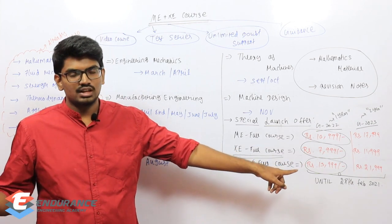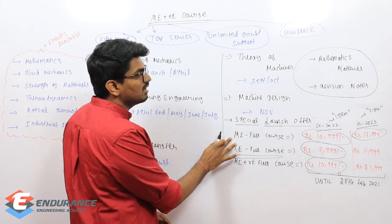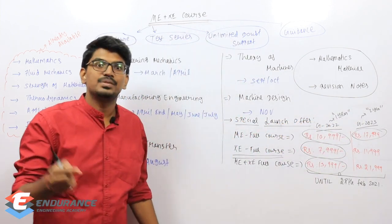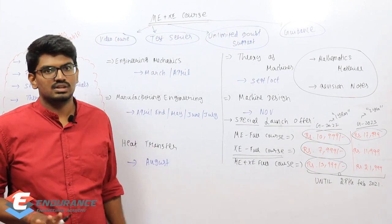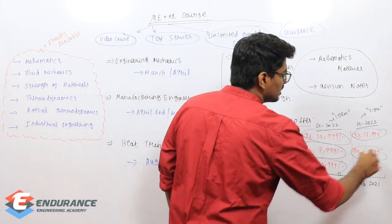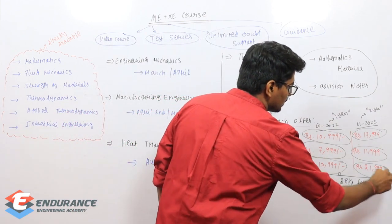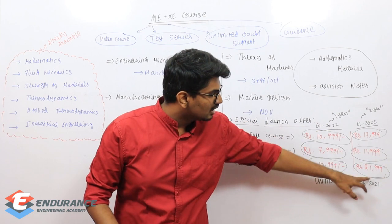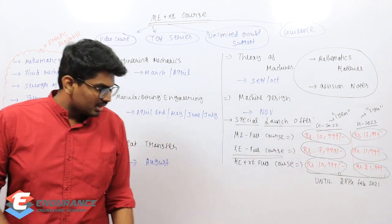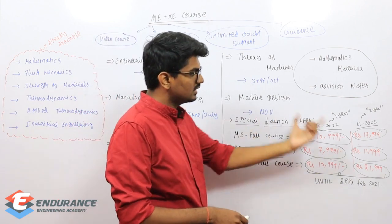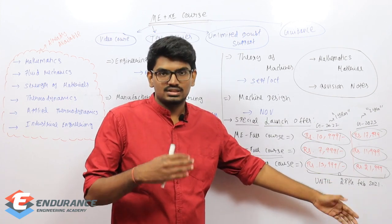For GATE 2023 — the 24-month course — ME full course is ₹17,999 and will include aptitude. XE full course is ₹11,999, and ME plus XE combined is ₹21,999. All three are two-year courses. Again, these prices are valid only until 28th February; after that, the cost will be revised as these are launch offer prices.